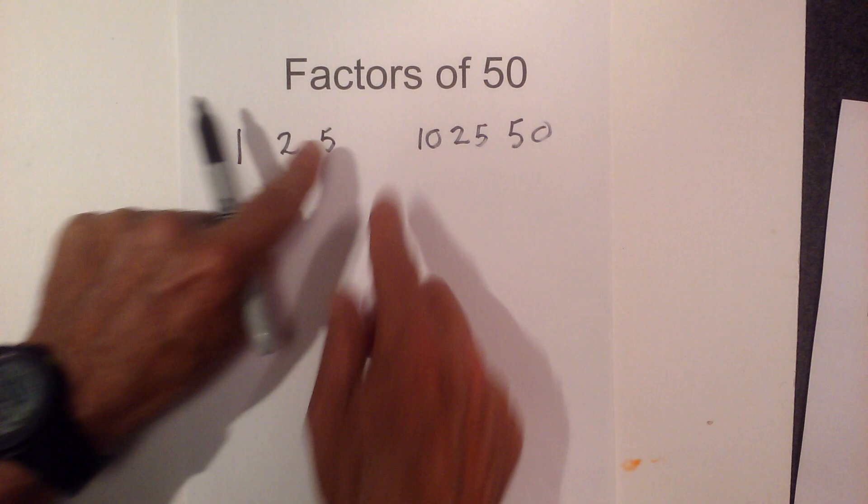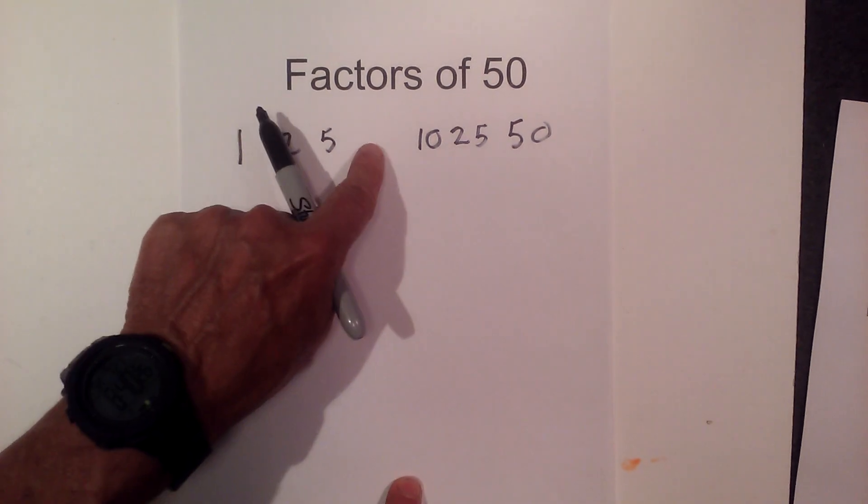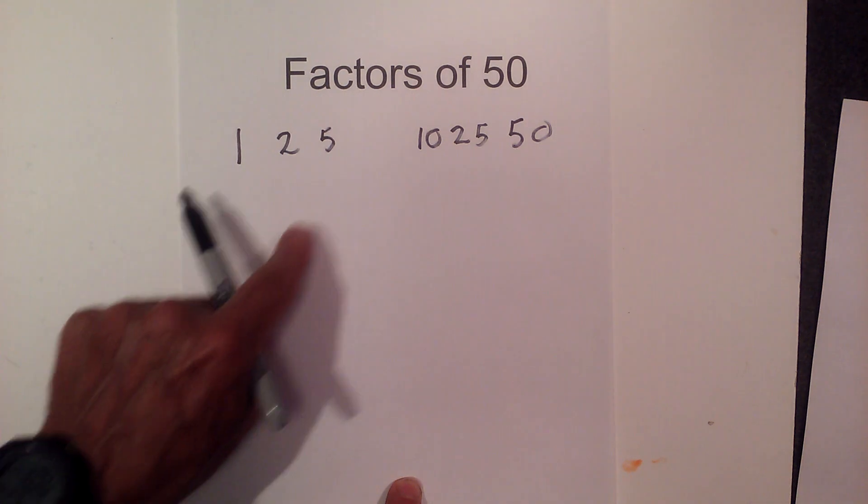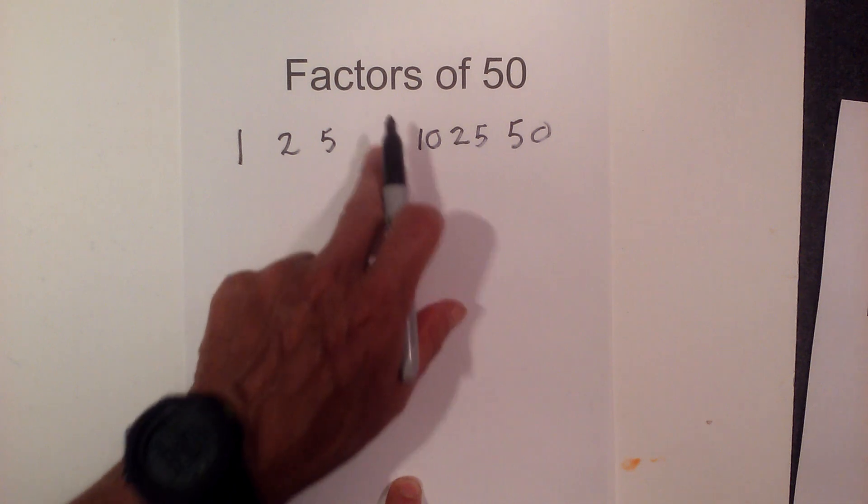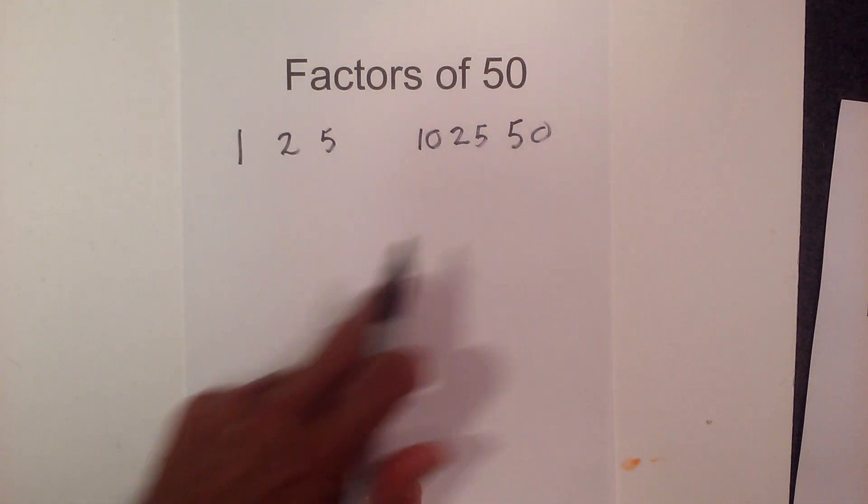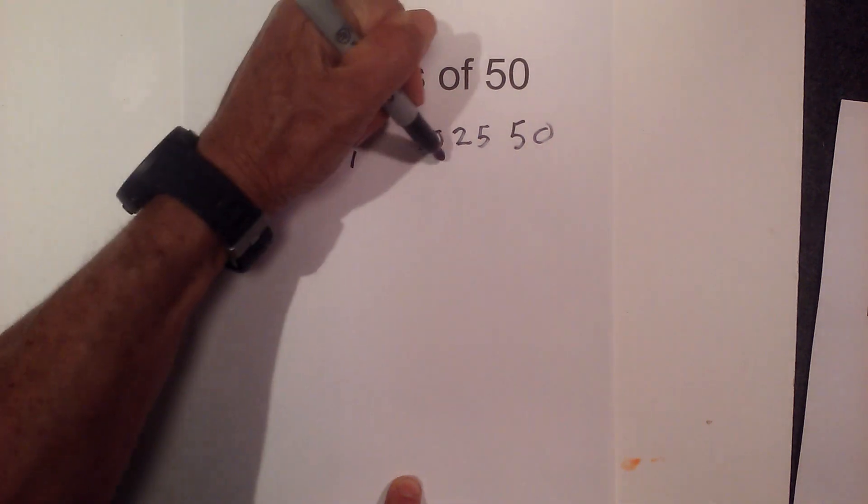Notice how the curtain is kind of closing. So now 6 does not go into 50. 7 doesn't go into 50. 8 does not go into 50, nor does 9. So there are no more numbers in between 5 and 10 that multiply together to equal 50. So I know I have all the factors of 50.